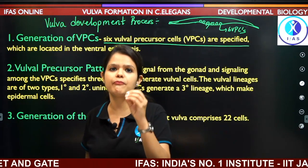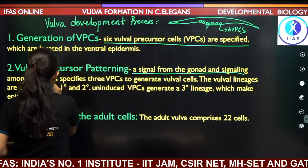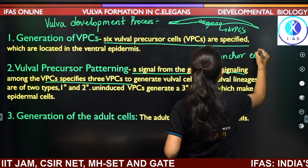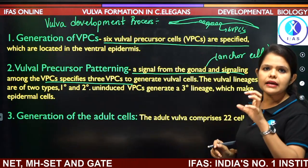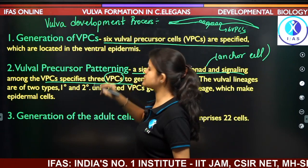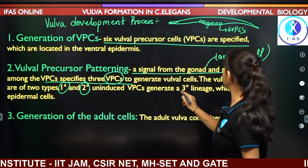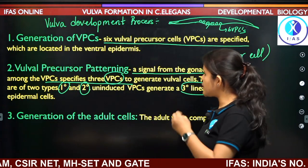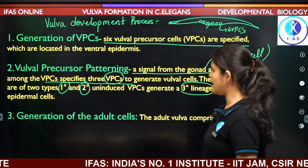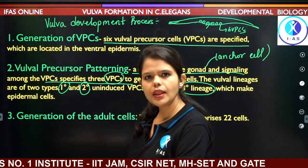The second step is patterning: a signal from the gonad and signaling among the VPCs specifies three vulva precursor cells. Signaling from the anchor cell through LIN-3 protein specifies the VPCs into three types: primary, secondary, and uninduced (tertiary) lineages. The primary and secondary and tertiary will have different fates. Finally, adult cells are generated and a vulva is created.